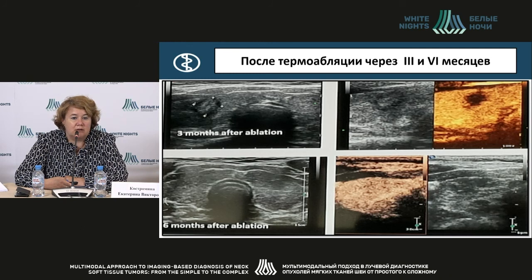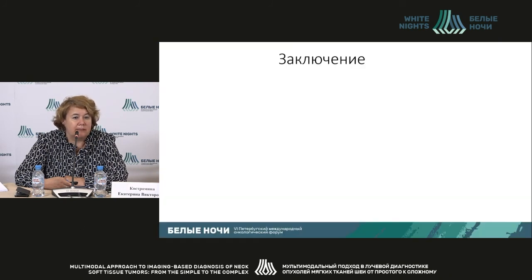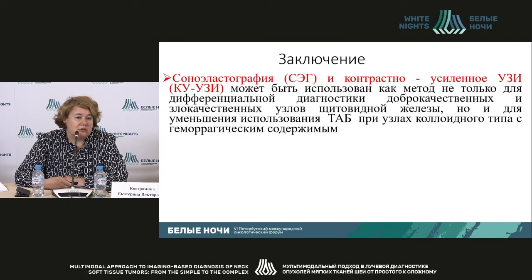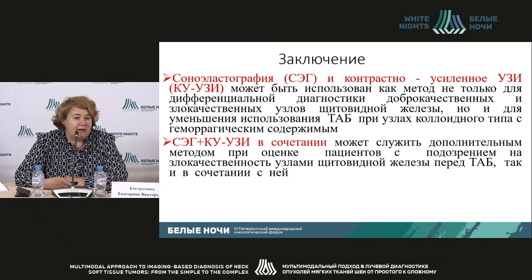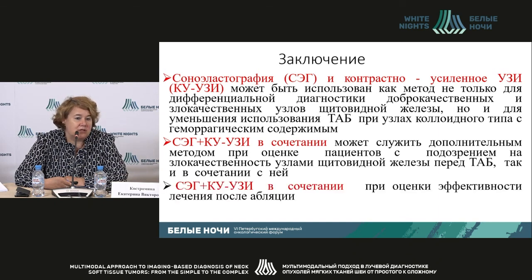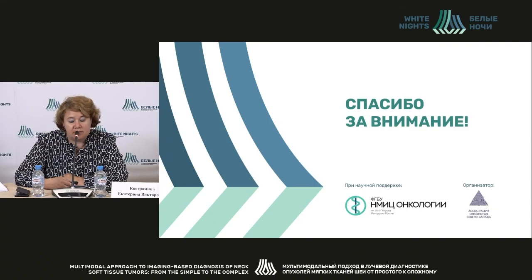There is practically no data yet on thyroid tissue modifications after ablation. In conclusion, elastography and contrast-enhanced ultrasound may be used for differential diagnosis of both benign and malignant thyroid nodes, and may also help reduce the use of FNA in cases of colloid-type nodes with hemorrhagic content. They can be used alongside FNA if there is a suspicion of malignancy, and to assess the effectiveness of ablation after the procedure.